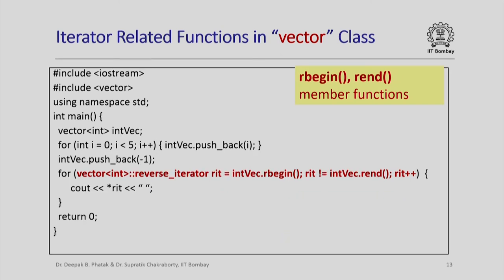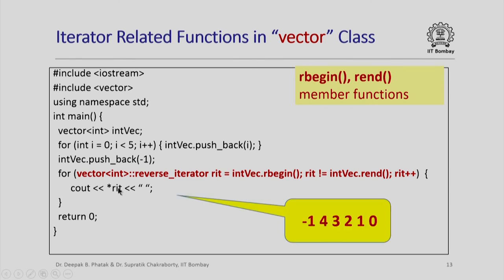The vector class also has reverse iterators, obtained via 'rbegin()' and 'rend()'. Using a reverse iterator initialized to 'int_vec.rbegin()' — an abstract pointer to the last element — and incrementing steps through the vector from end to beginning until 'int_vec.rend()' is reached. Executing this prints the vector in reverse order: -1, 4, 3, 2, 1, 0.